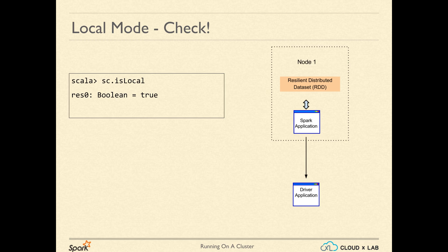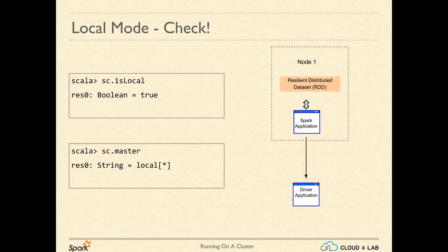SparkContext (sc) has a flag called isLocal. If this flag is true, it means Spark is running in local mode; otherwise, it is running in cluster mode. The other way to check the mode is by checking the variable master, which carries the URL of the master. To know which resource manager we are using, we can print the value of sc.master.